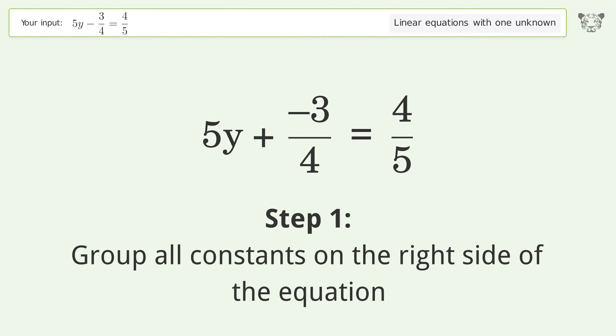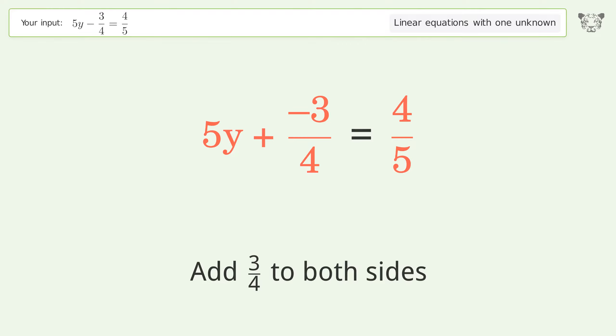Group all constants on the right side of the equation. Add 3 over 4 to both sides.